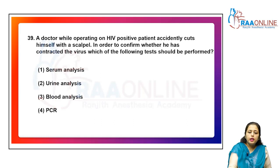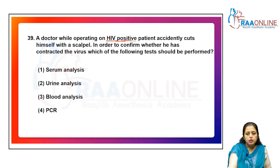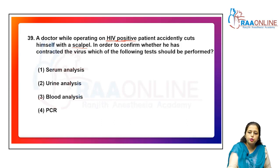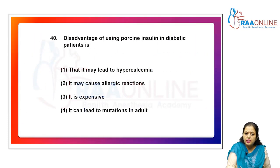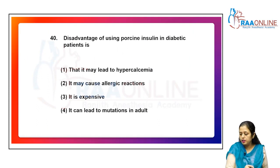A doctor who accidentally cuts himself with a scalpel while operating on an HIV-positive patient should perform PCR — polymerase chain reaction — first, to confirm whether he has contracted the virus. Serum analysis, urine analysis, and blood analysis are not the correct first tests. PCR is the appropriate answer.